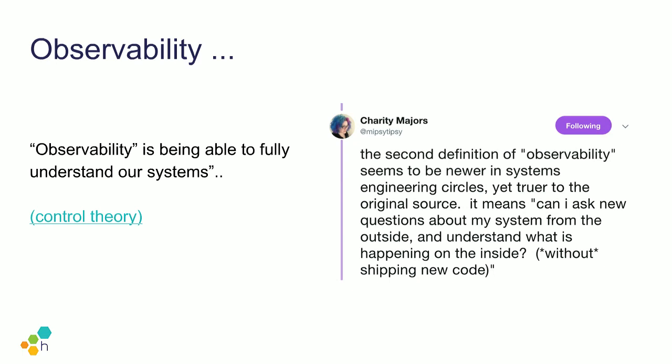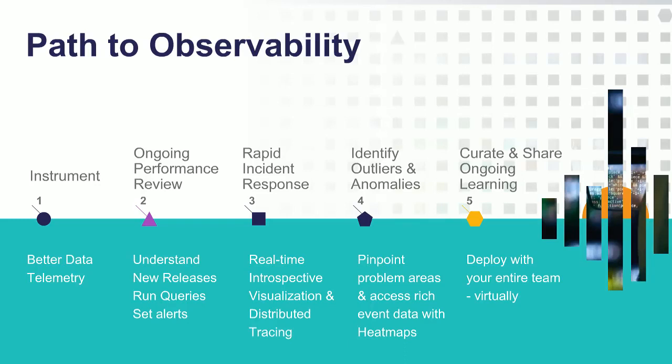Observability isn't just a thing you get to and stop — it's a journey. There are some previous installments of this webcast series that represent different steps on the path to observability. The only one you really have to do before the others is the first one, because you have to have instrumentation before you can do the rest. That first webinar provides a great base on which to build your observability practice. But today, we're going to focus on how to identify outliers and anomalies in your data using a feature we developed specifically for that.